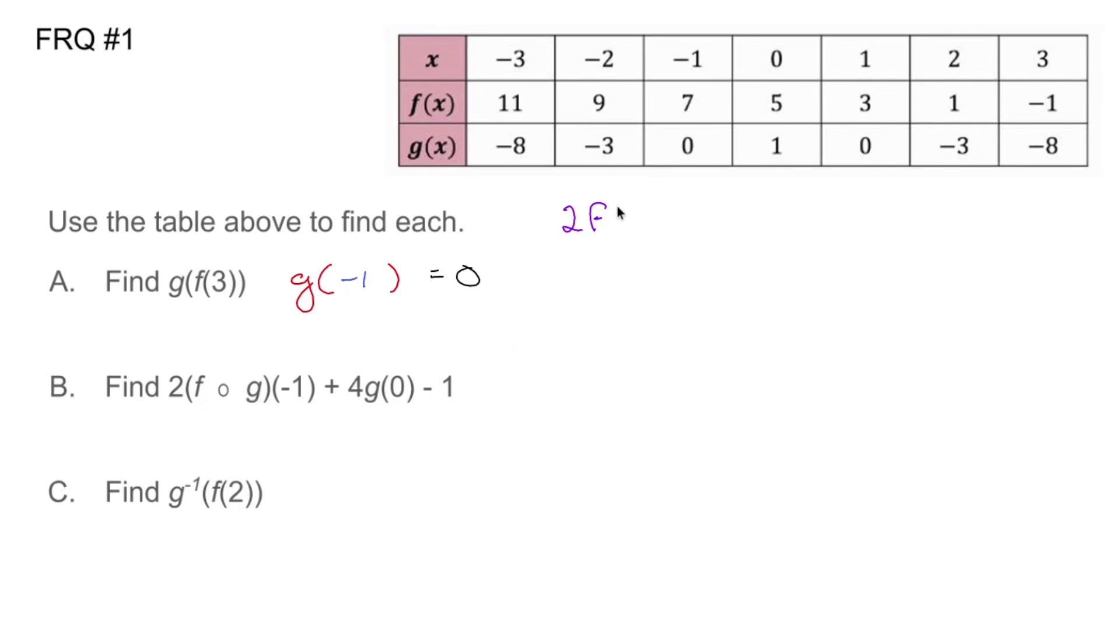f of g of negative one, like that, plus four of g of zero minus one. Let's start out by finding out g of negative one. So let's go to negative one. g of negative one is zero, which I just did.